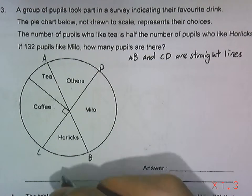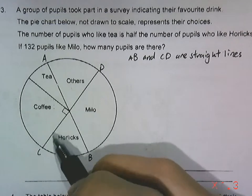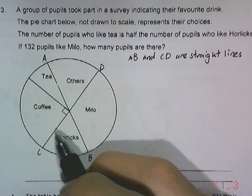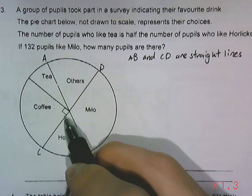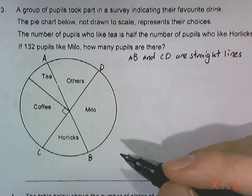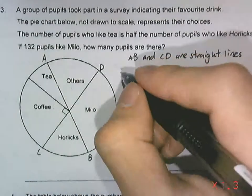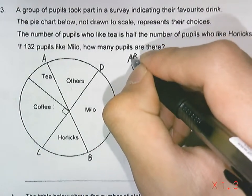This question is missing an assumption. In the pie chart where geometry is involved, for example this 90 degrees represented by the right angle, I'm going to assume that the lines that we see here are straight lines.